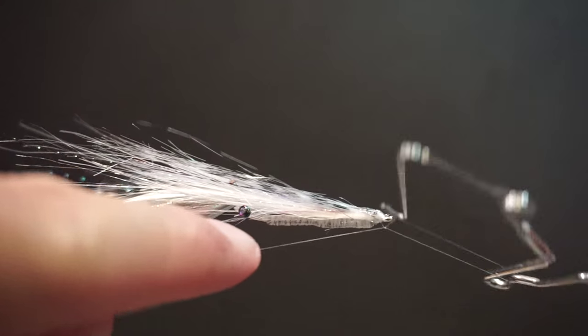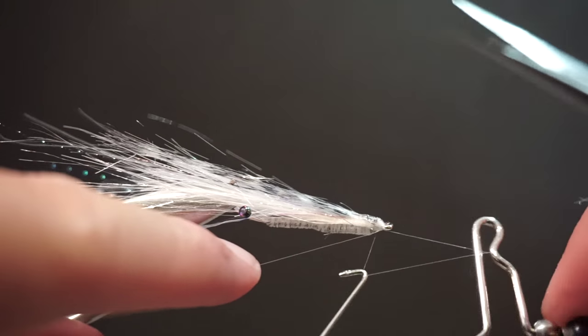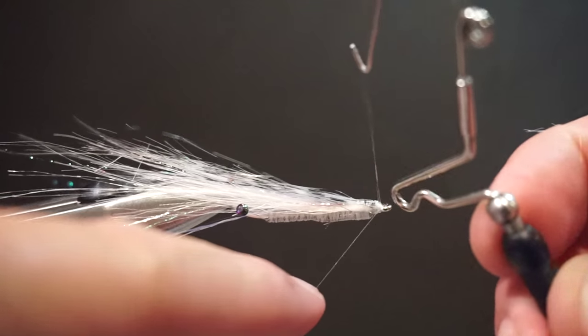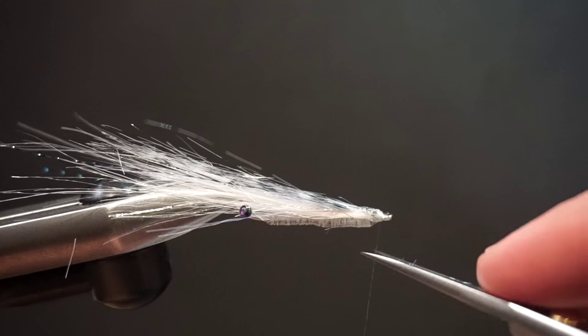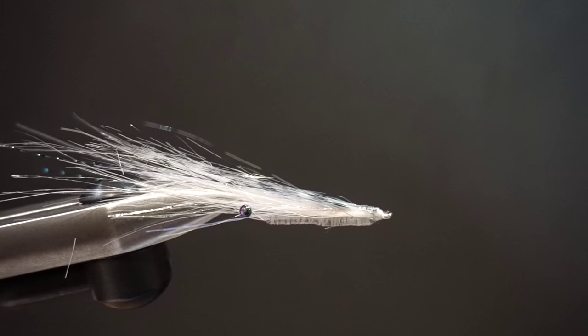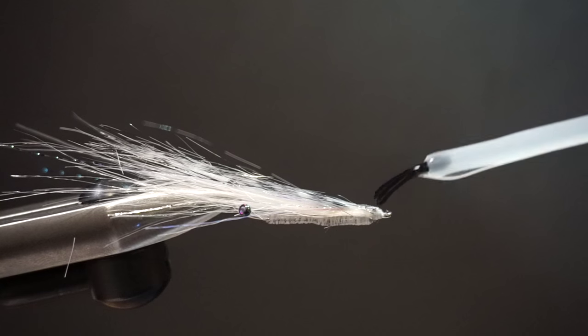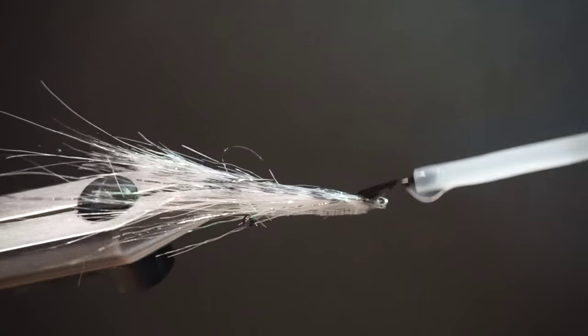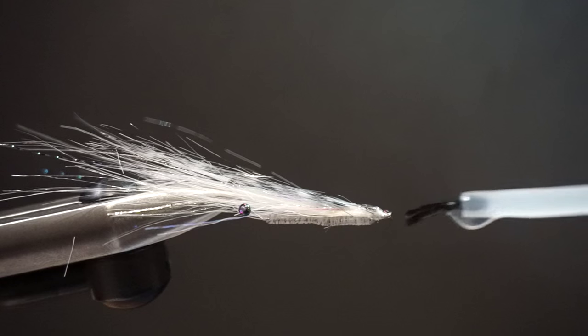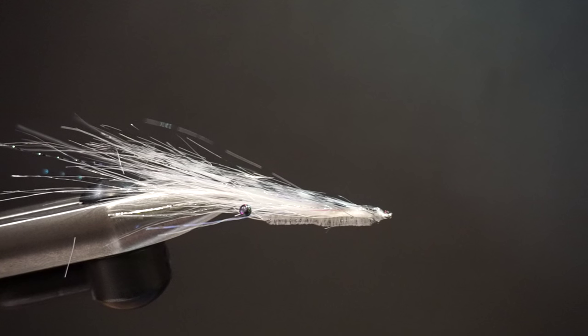Then we're going to finish this off with some Loon Hard Head Clear. And it's real important that you use a water-based cement like this. You don't want to use any epoxy or CA glues to finish these flies. The bonefish use smell to locate their shrimp. And the second they smell epoxy, they are out of there. So this stuff works really well. A little bit of that. Keep everything in place. And that's the grizzly shrimp.